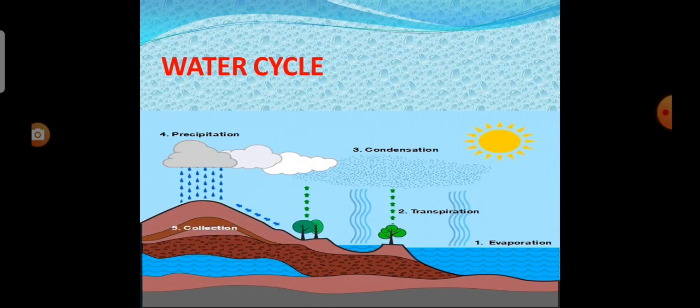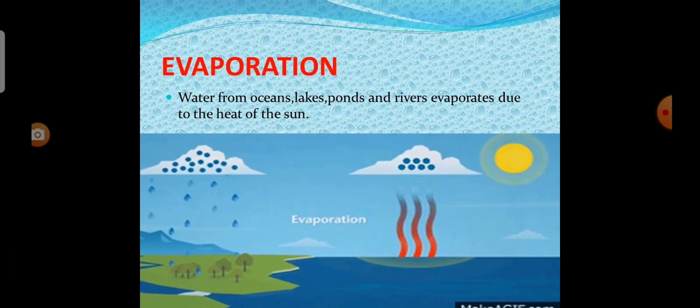Now we will see about the water cycle. Water cycle is a continuous process. It involves three stages: evaporation, condensation, and precipitation. It is also called the hydrological cycle. Now we will see the first one, evaporation. Water from oceans, lakes, ponds, and rivers evaporates due to the heat of the sun.